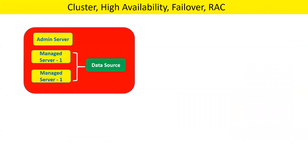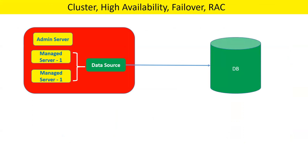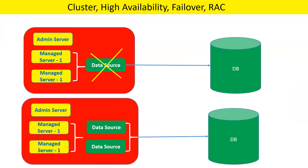Now, what is the solution when we talk about the data, apart from the application? Suppose you have a host with two managed servers running and you have configured one data source targeted to managed server 1 and managed server 2, with a database in the backend. If your data source crashes, your application will not be able to make any connection with the database. It doesn't matter how many managed servers are running — if the data source, which is the single point of contact to the database, is crashed, your application will not work as expected.